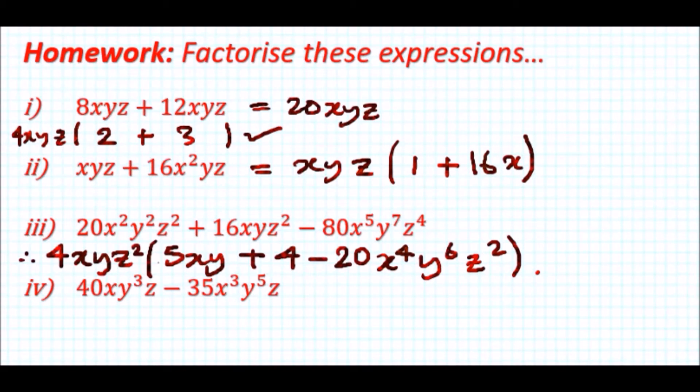Now finally the last one, 40xy³z minus 35x³y⁵z. 14, 35 they're both in the five times table. They all have at least an x, they all have at least y cubed or higher, and they all have at least z. So conveniently we have all the terms in the first one and to make 40 you just need to multiply by 8.